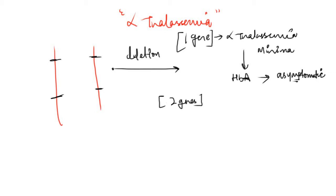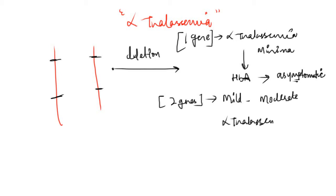In case of two gene deletions, there will be a significant reduction in the production of HbA, so there will be a mild to moderate amount of anemia. This is called alpha thalassemia minor.